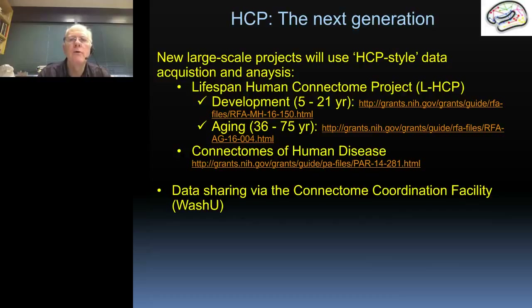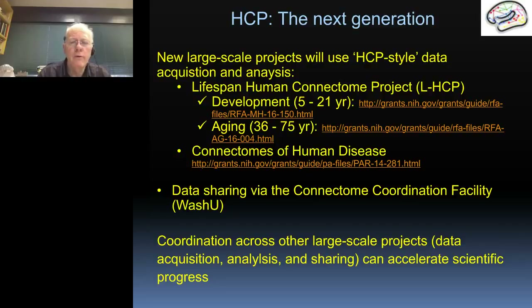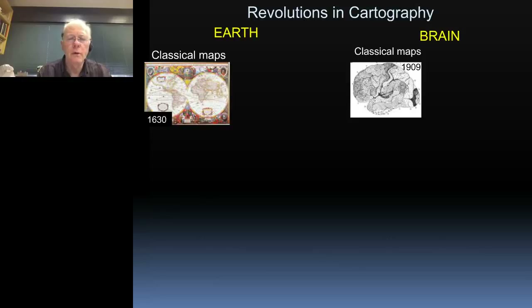The data acquired by both the lifespan and connectomes of human disease endeavors will be shared in a common portal centered at Washington University — essentially an extension of the ConnectomeDB — now entitled the Connectome Coordination Facility, because it will draw in data from multiple projects from multiple institutions and consortia. We are excited that this coordinated effort will lead to richer, more informative data and better use of taxpayer dollars for studying brain circuits in health and disease.